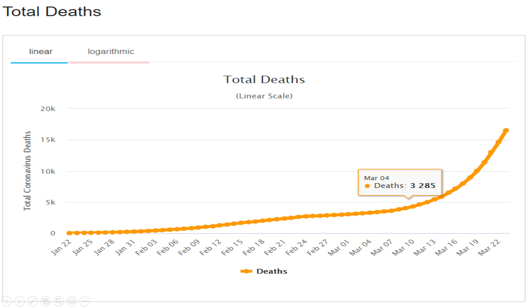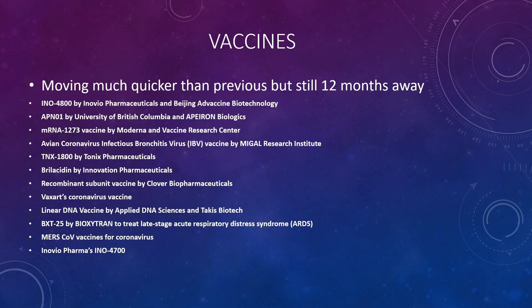When we look at total deaths, it has basically become logarithmic — the number of deaths is just increasing dramatically. Some reports out of Italy showed 700 people dying in a 24-hour period. It seems the elderly are more vulnerable, but definitely people who have comorbid conditions — diabetes, hypertension, heart failure, emphysema, asthma — those types of comorbid conditions put people at greater risk.